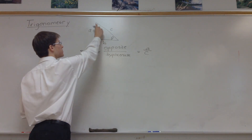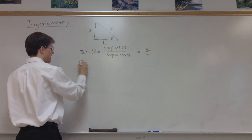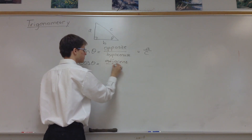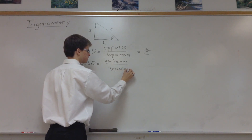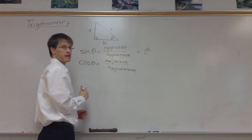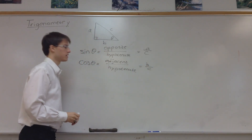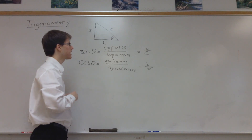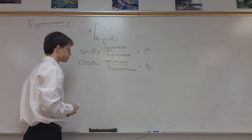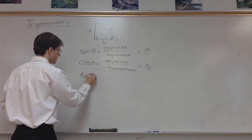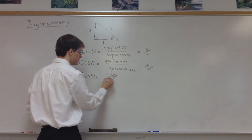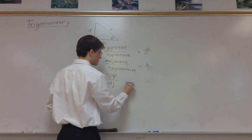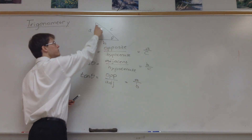The cosine of theta is equal to the adjacent side over the hypotenuse. The adjacent side to the angle in this case is b, and the hypotenuse is c, so cosine theta equals b over c. But if the angle were elsewhere, adjacent would change — though the hypotenuse never changes. The tangent of theta is equal to opposite over adjacent. In this triangle, tangent equals a over b, but for the other angle it would be b over a.